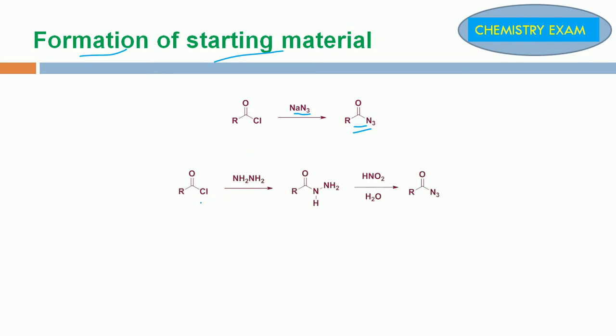Second method, we can take Acid Chloride in the presence of Hydrazine Hydrate to form Acid Hydrazide. This Acid Hydrazide by diazotization forms Acid Azide.